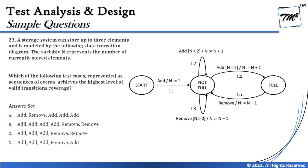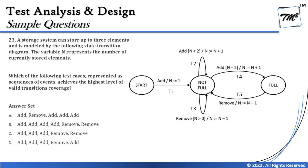Option B is infeasible. It shows four consecutive add operations, but the question clearly states the system can store up to three elements. Once you add three times in sequence, the container is full, so a fourth add is not possible — making this sequence infeasible.